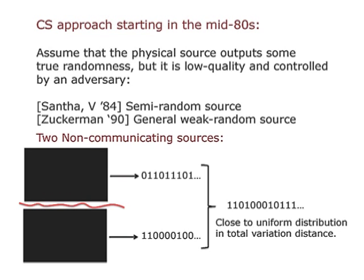There are two ways to use these low-quality sources of randomness. One way is to assume you have two or more such devices that you can physically isolate from each other, and ask: given the outputs of two such devices, can you combine them to efficiently create a string that is very close to uniformly random? The other way uses what are called extractors: you take the output of this box, add in log n truly random bits, and massage these two together to get an output that is extremely close to random in total variation distance.